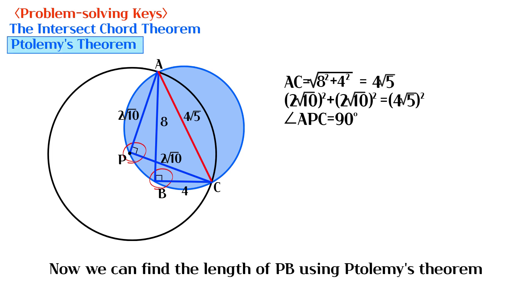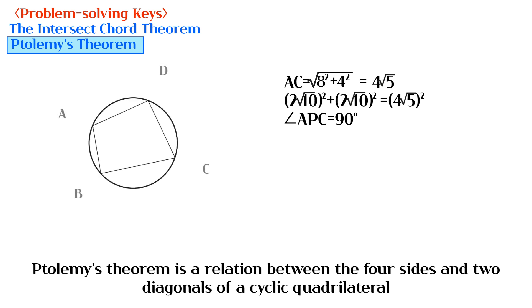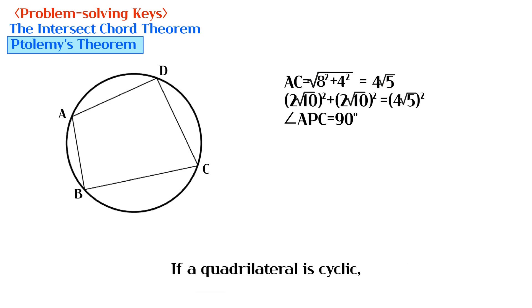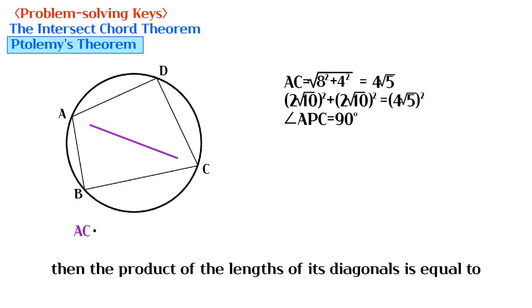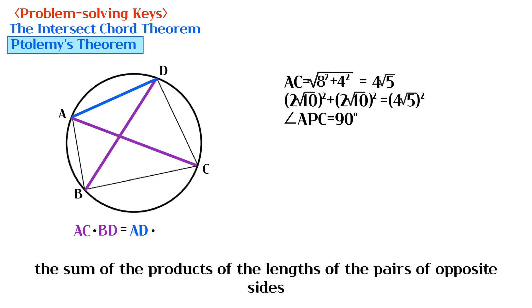Now we can find the length of PB using Ptolemy's theorem. Ptolemy's theorem is a relation between the 4 sides and 2 diagonals of a cyclic quadrilateral. If a quadrilateral is cyclic, then the product of the lengths of its diagonals is equal to the sum of the products of the lengths of the pairs of opposite sides.